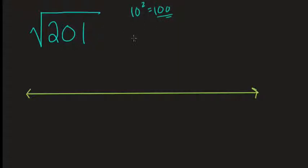So then go for a higher value, maybe like 20, right? But 20 squared is 400. That's too large.